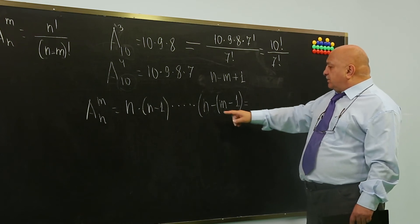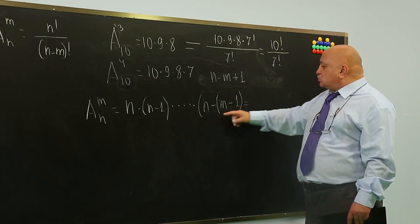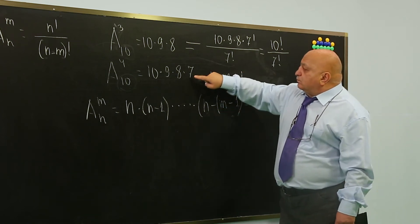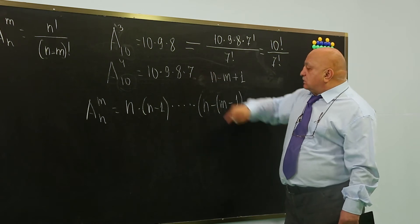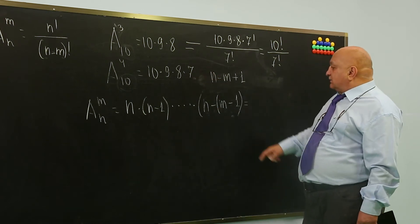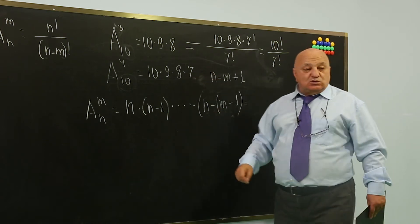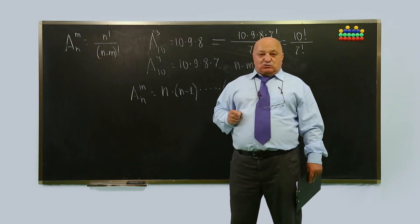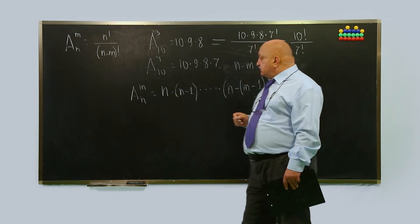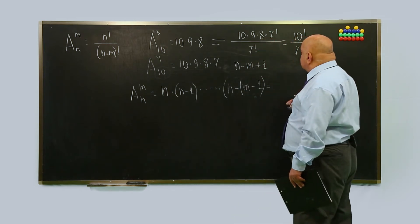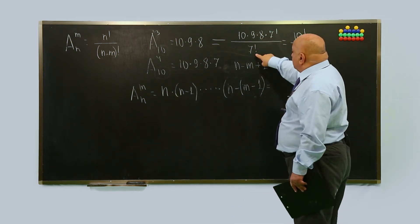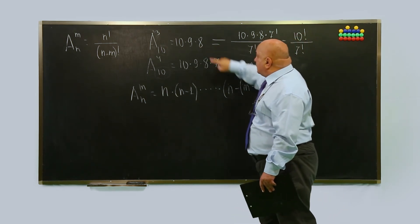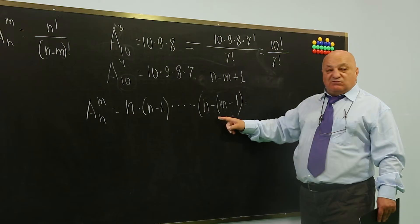The second index of n minus m is equal to n minus m minus m. The second index of n minus m is equal to m. Now this is the end of everything.